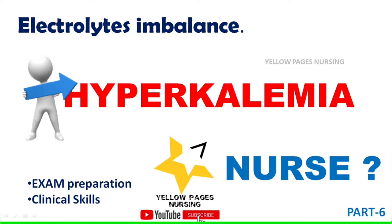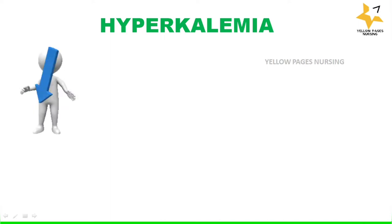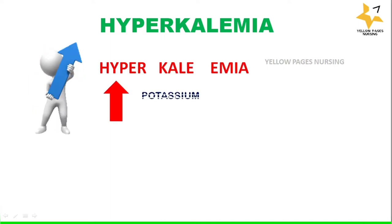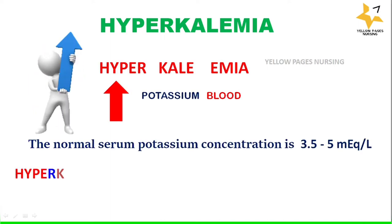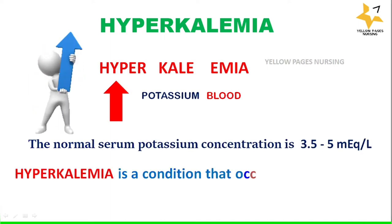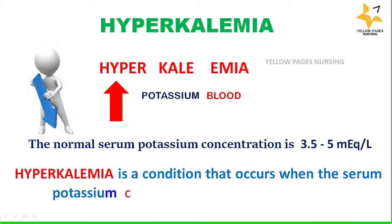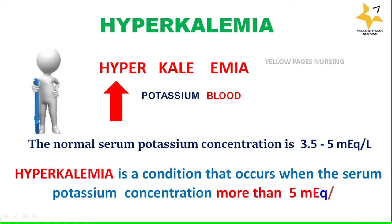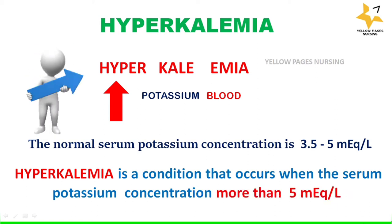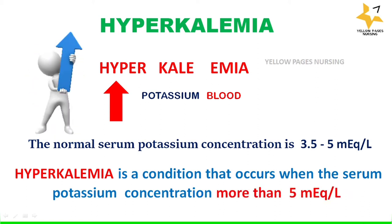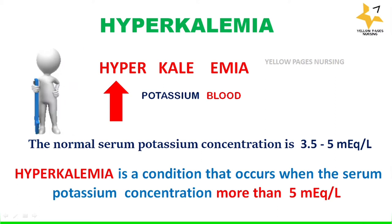As we all know, the normal serum potassium level is 3.5 to 5 milliequivalents per liter. Hyperkalemia is a condition that occurs when the serum potassium concentration goes more than 5 milliequivalents per liter.